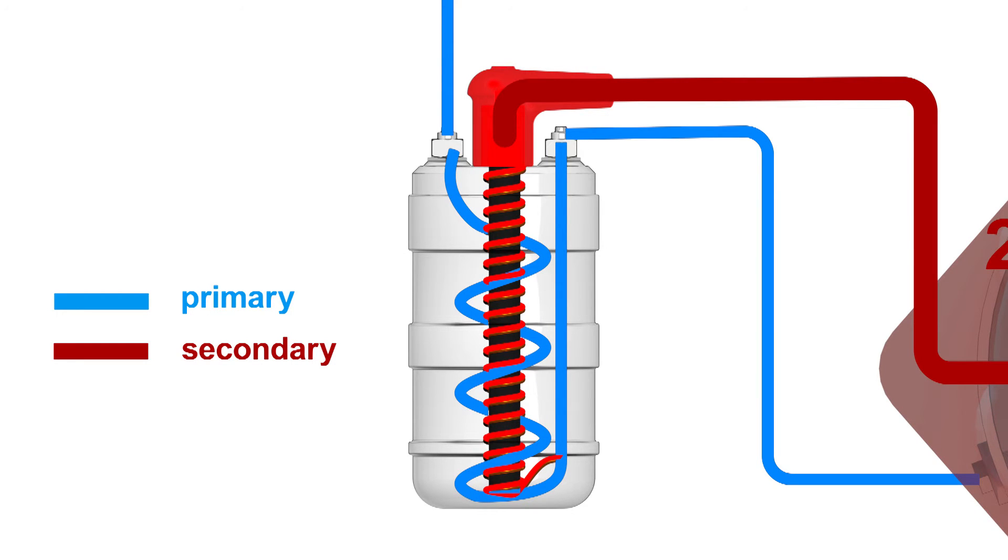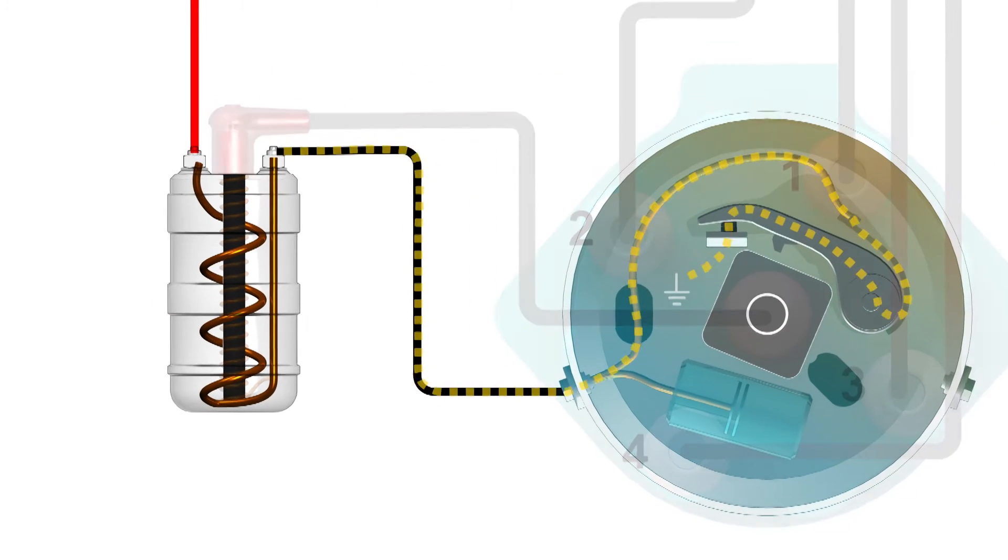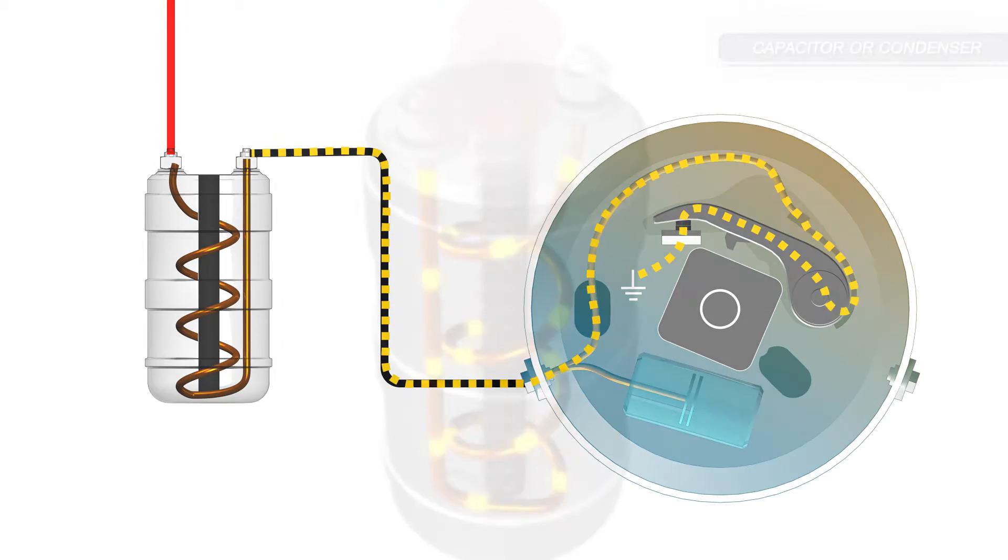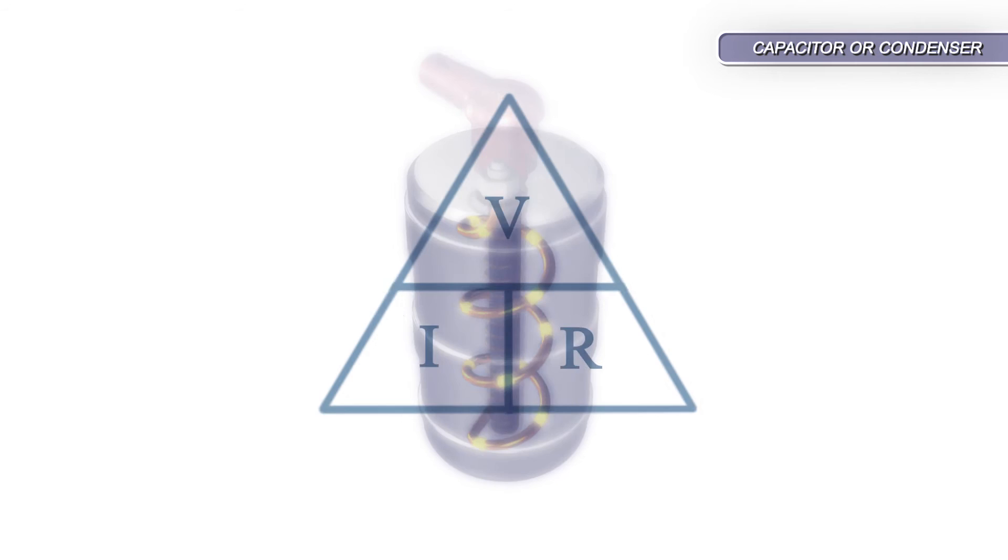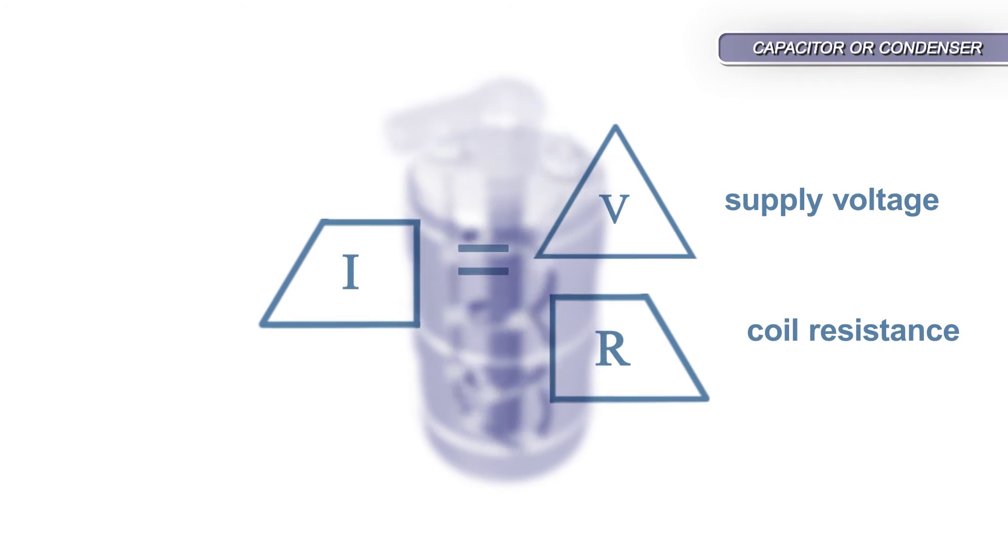Current from the ignition circuit flows through the primary coil to ground via a closed set of contact breakers. The current flow through most primary windings varies with supply voltage and coil resistance. It can be anywhere between 3 and 9 amps.